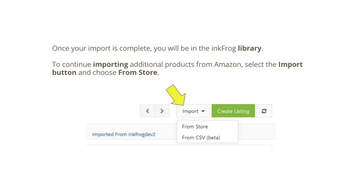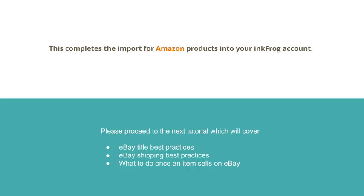Once your import is complete, you will be in the InkFrog library. To continue importing additional products from Amazon, select the Import button and choose From Store. This completes the import for Amazon products into your InkFrog account. Please proceed to the next tutorial, which will cover eBay title best practices, eBay shipping best practices, and what to do once an item sells on eBay.